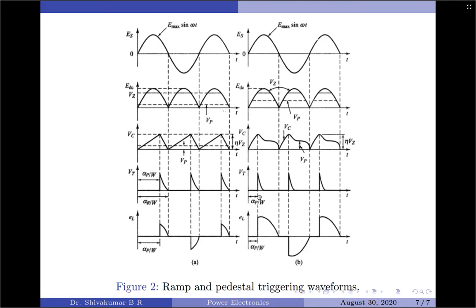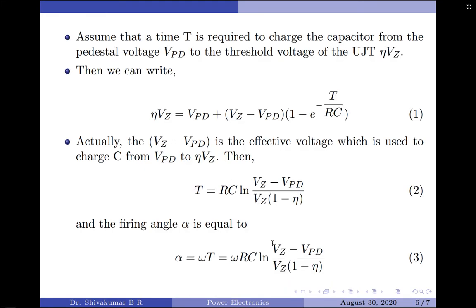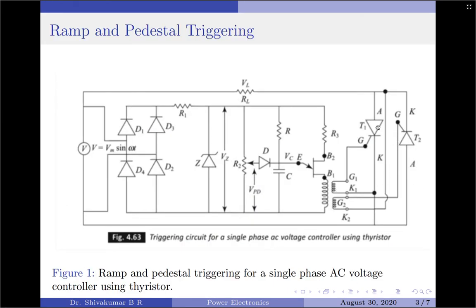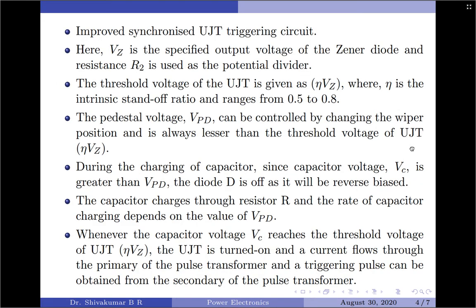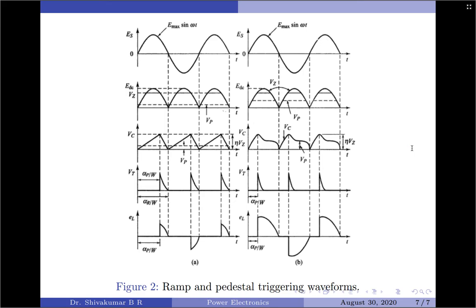Looking at the load voltage: whenever a thyristor triggers, a load voltage appears across the load. The thyristors conduct only for one half of the input supply, so even though two triggering pulses are created in one full input cycle, only one thyristor conducts in each half cycle. The load voltage appears when either T1 or T2 is triggered. This is the operation for a high value of Vpd.